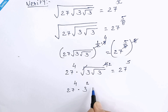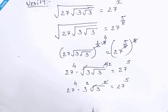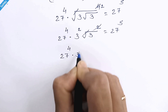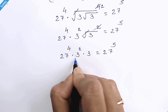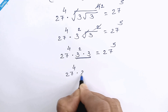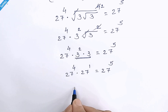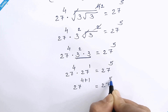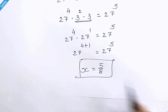Here we have 3 squared, and this 2 gets cancelled out. So we have 27 raised to 4 times 3 squared times 3 is equal to 27 raised to 5. This is 3 cubed, and 3 cubed is 27, so we can write 27 raised to 4 times 27 raised to 1 is equal to 27 raised to 5, which gives 27 raised to 4 plus 1 equals 27 raised to 5. So x equal to 5 over 8 is the correct answer.